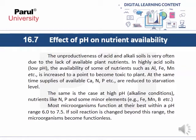Effect of pH on nutrient availability: The unproductiveness of acid and alkaline soils is very often due to the lack of available plant nutrients. In highly acid soils at low pH, the availability of some nutrients such as aluminum, iron, and manganese is increased to a point where they become toxic to plants. At the same time, supplies of available calcium, nitrogen, phosphorus, etc. are reduced to starvation levels. The same occurs under high pH alkaline conditions.